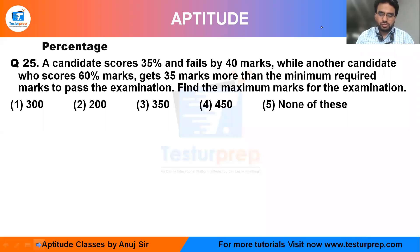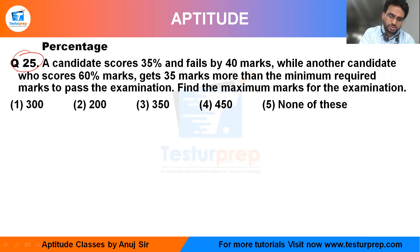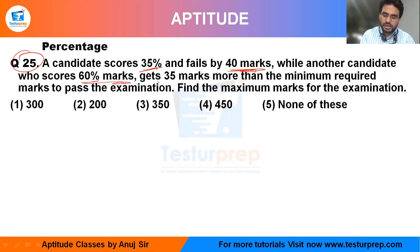Welcome back to question number 25. In this question, a candidate scored 35 percent and failed by 40 marks, while another candidate who scores 60 percent gets 35 more than the minimum required passing marks.